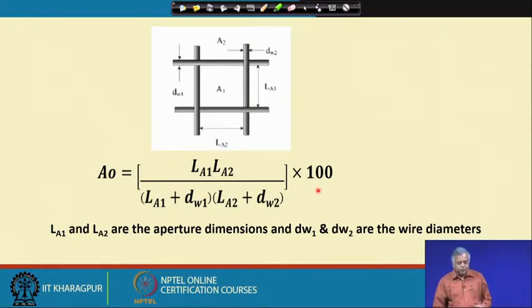If we know the wire diameters - we can even measure them physically - and we know the opening dimensions of the length and width of the available aperture, then we can calculate the available aperture area.